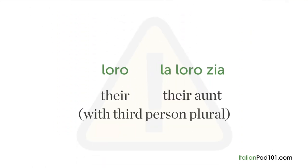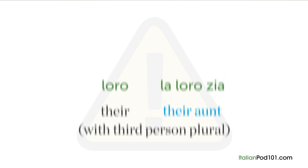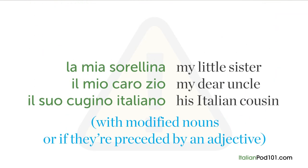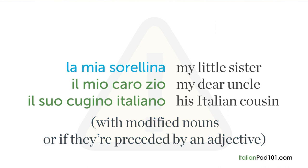Exceptions are with the third person plural 'loro' — their — as in 'la loro zia' — their aunt. With plural nouns: 'i tuoi fratelli' — your brothers. And with modified nouns or those preceded by an adjective: 'la mia sorellina' — my little sister; 'il mio caro zio' — my dear uncle; 'il suo cugino italiano' — his Italian cousin.